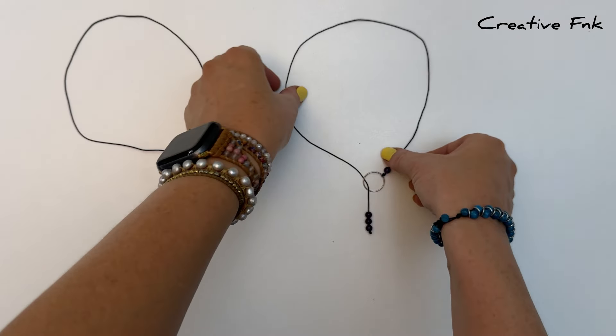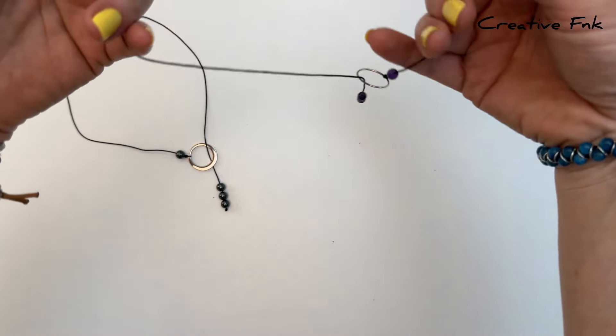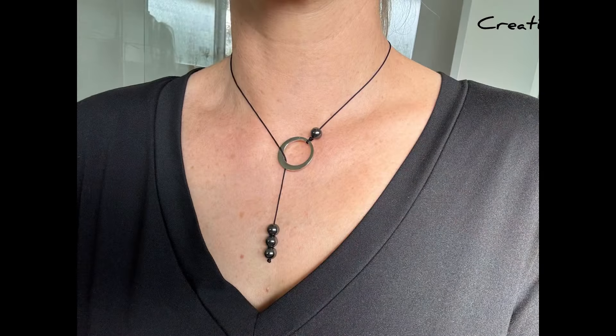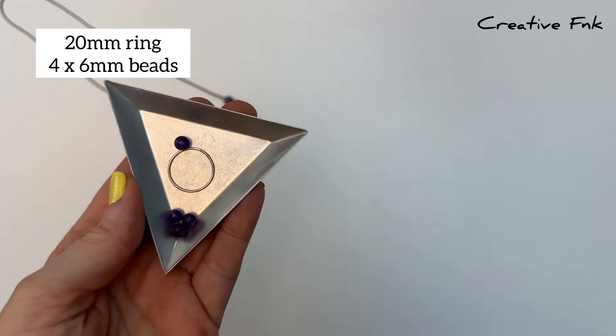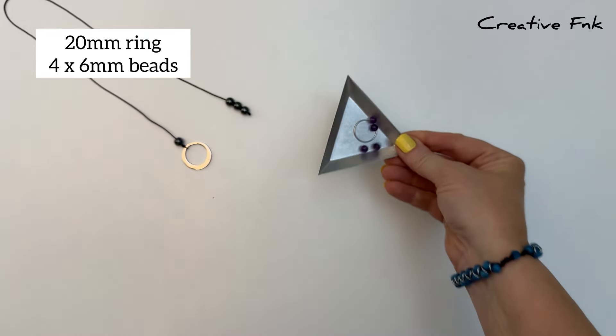Hey guys, in this video we're making a simple single strand floating necklace. This design has gemstone beads on one end and a ring on the other, so we just slip those gemstone beads through the ring to hold the necklace in place at the front.